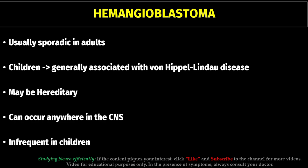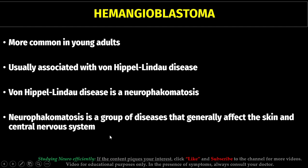Even though hemangioblastoma is more common in the cerebellum, this kind of tumor can occur anywhere in the CNS. When we compare children and adults, hemangioblastoma is infrequent in children. In children, it is more commonly associated with von Hippel-Lindau disease, which is a type of phakomatosis — a group of diseases that generally affects the skin and the central nervous system.